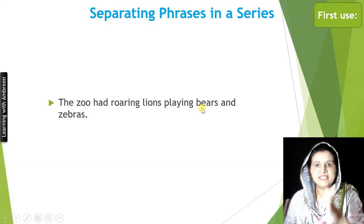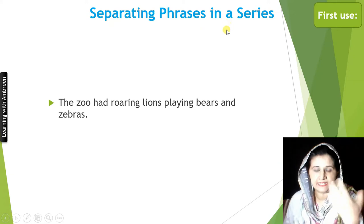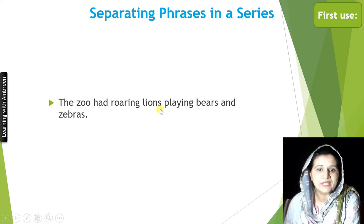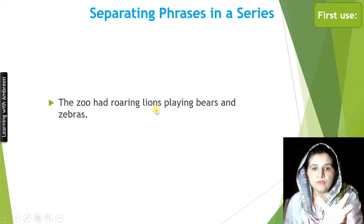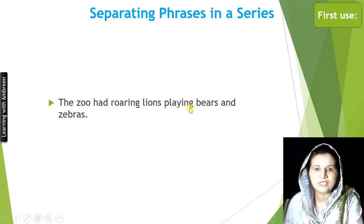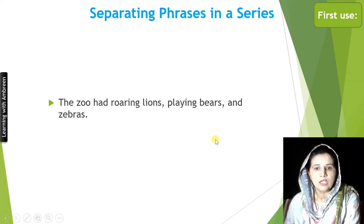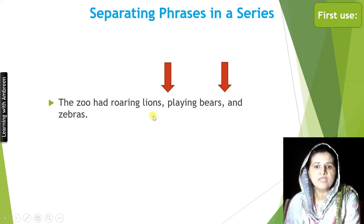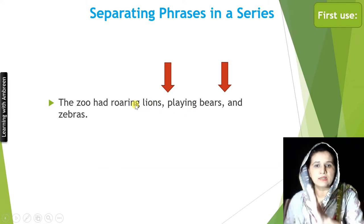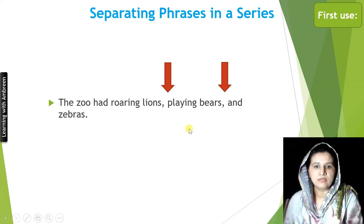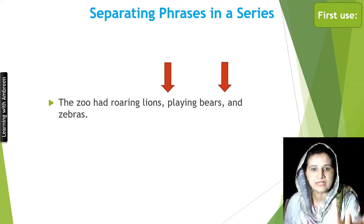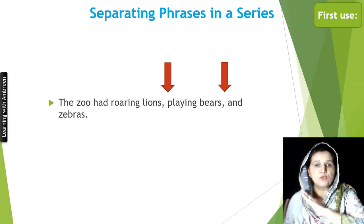Commas not only separate single elements in a series but also separate phrases in a series. For example: 'The zoo had roaring lions, playing bears, and zebras.' Without commas we are confused whether the lions are playing or the bears are playing. By adding commas, we are absolutely clear that the bears are playing and the lions are roaring.